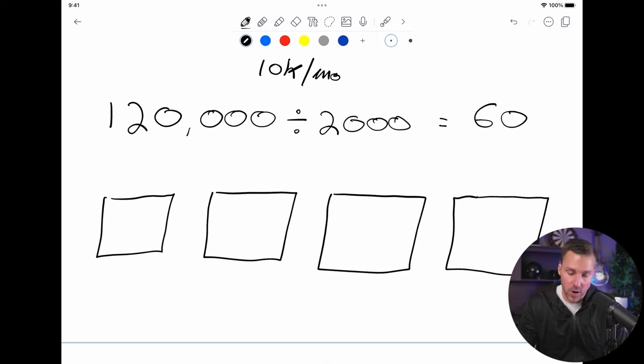So using this rough benchmark of say 10K a month as our goal, of course, feel free to move this up to 20K or 50K or 100K. I would strongly suggest not moving it down because this is a very realistic and achievable number if you're willing to put in the work and do the things required.